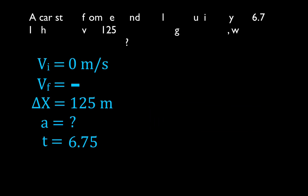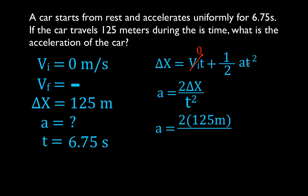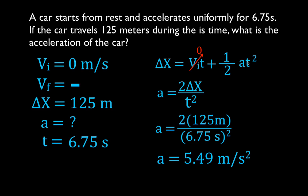We bring our information and equation to the next step. We're solving for acceleration. Since the initial velocity is zero, the term initial velocity times time is also zero, and that simplifies the equation. The change in position is now equal to just one half a times t squared. To solve for the acceleration, we multiply both sides by two, giving us two times change in position in the numerator divided by time squared. That means acceleration equals 2 times 125 divided by time squared, and the acceleration is 5.49 meters per second squared.